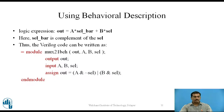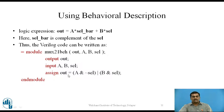The Verilog code for the Behavioural approach can be written as follows. The module definition starts with the module keyword followed by the name MUX21BEH. In the bracket we provide the port list: OUT is the output, and A, B, and SEL are the inputs, defined in the next two lines using output and input keywords. In the following statement we write the ASSIGN statement: assign OUT = A & (~SEL) | (B & SEL). This statement implements the logic expression for the multiplexer.